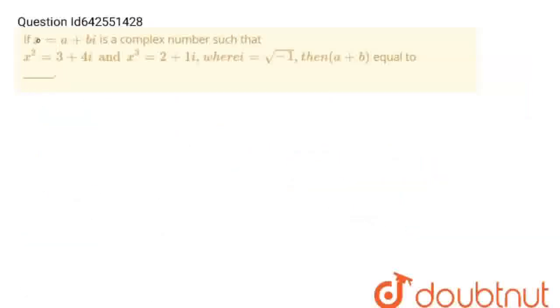Hello students, the question is: if x is equal to a plus b iota is a complex number such that x square is equal to this and x cube is equal to this, where iota is equal to square root minus 1, then a plus b is equal to. So let's solve this problem.